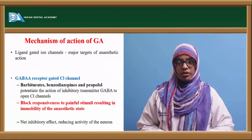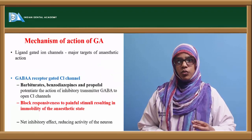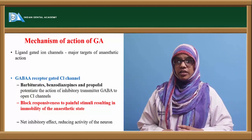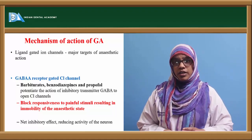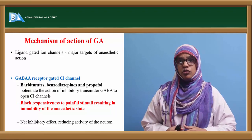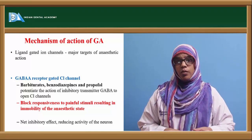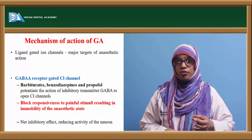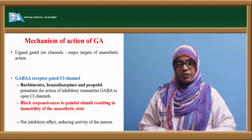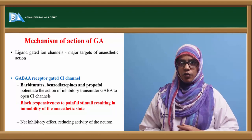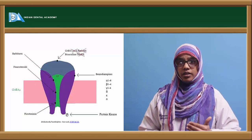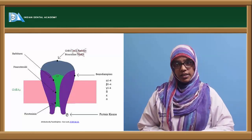General anesthesia prevents synaptic propagation. Ligand-gated ion channels are the major target of anesthetic agents. GABA receptors, which are gated chloride channels, are key targets — barbiturates, benzodiazepines, and propofol potentiate the action of the inhibitory transmitter GABA to open the chloride channel. This blocks responsiveness to painful stimuli, resulting in immobility. The net inhibitory effect is reduced neuronal activity. This is shown diagrammatically where GABA is attached to the chloride channel to bring about general anesthetic action.